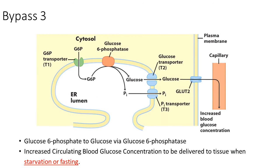The bypass 3 reaction is the conversion of glucose-6-phosphate to glucose via glucose-6-phosphatase, which is the reverse of glycolysis step 1 — in essence reversing hexokinase — thereby obtaining the starting material, glucose.